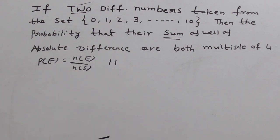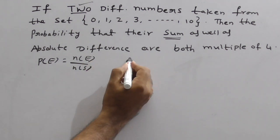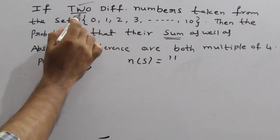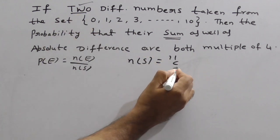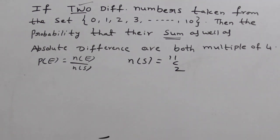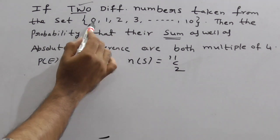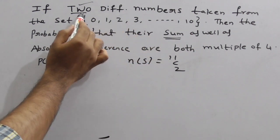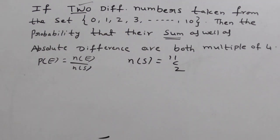So here, what is N of S? You can observe easily. So given digits are 11, from 11 digits you have to select two. Therefore, N of S is 11 C2. From 0 to 10, 11 are there. From these digits, you have to select two. N of S is 11 C2.